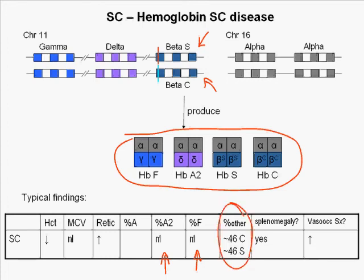Individuals with hemoglobin SC disease have a mild chronic hemolytic anemia with low hematocrit and elevated reticulocyte count, although not as severe as seen in homozygous SS sickle cell anemia. Patients with SC disease have splenomegaly and vaso-occlusive episodes, although not as severe or frequent as in SS. The peripheral smear shows a predominance of targets with rare irreversibly sickled cells.